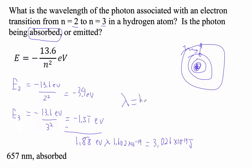Wavelength is hc over E. 6.626 times 10 to the minus 34.